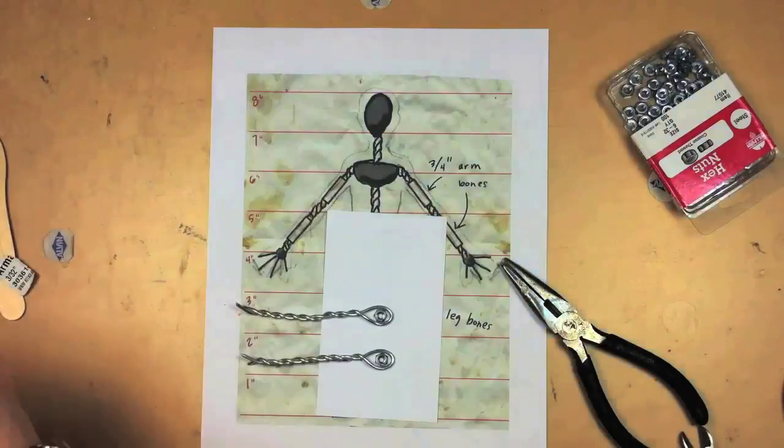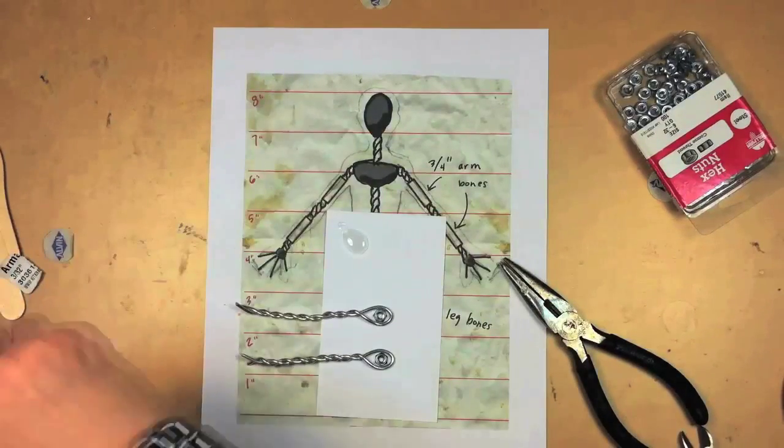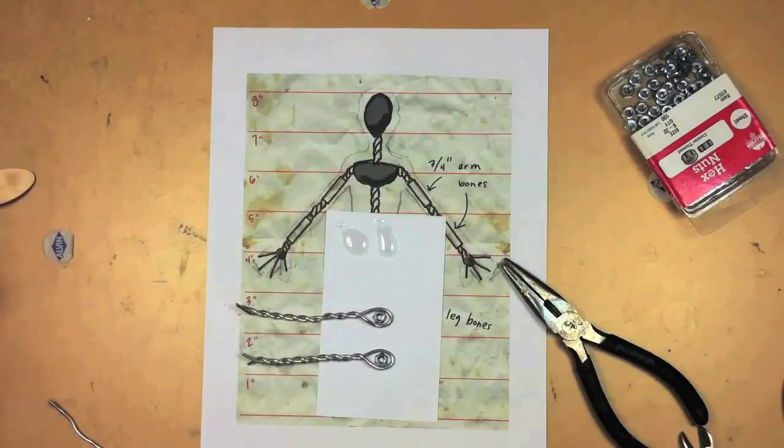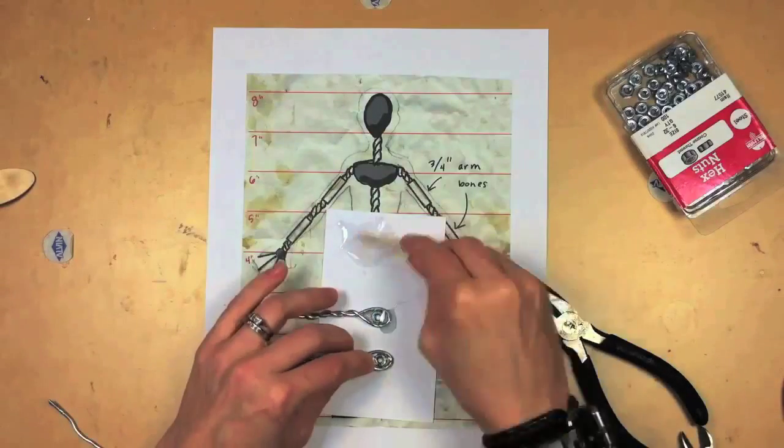First, we're going to make the feet by setting nuts with two-part epoxy into aluminum wire bent around the nut. Be careful not to get epoxy on the threads.